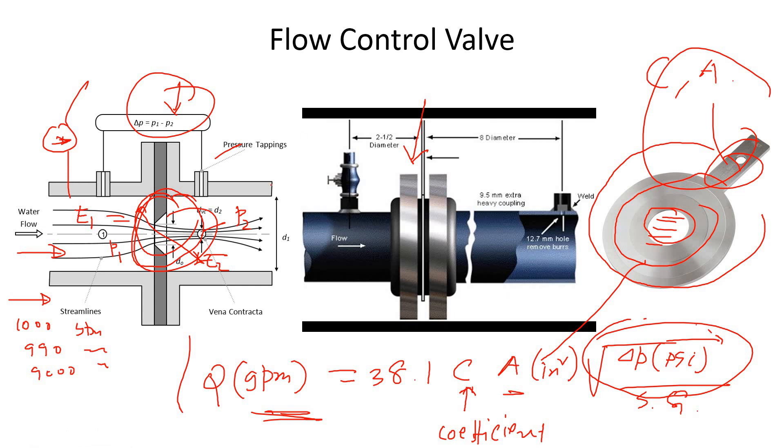A flow control valve - what is that? Assume that we want to change the flow through this orifice. We can use a needle valve that looks like a needle like this.